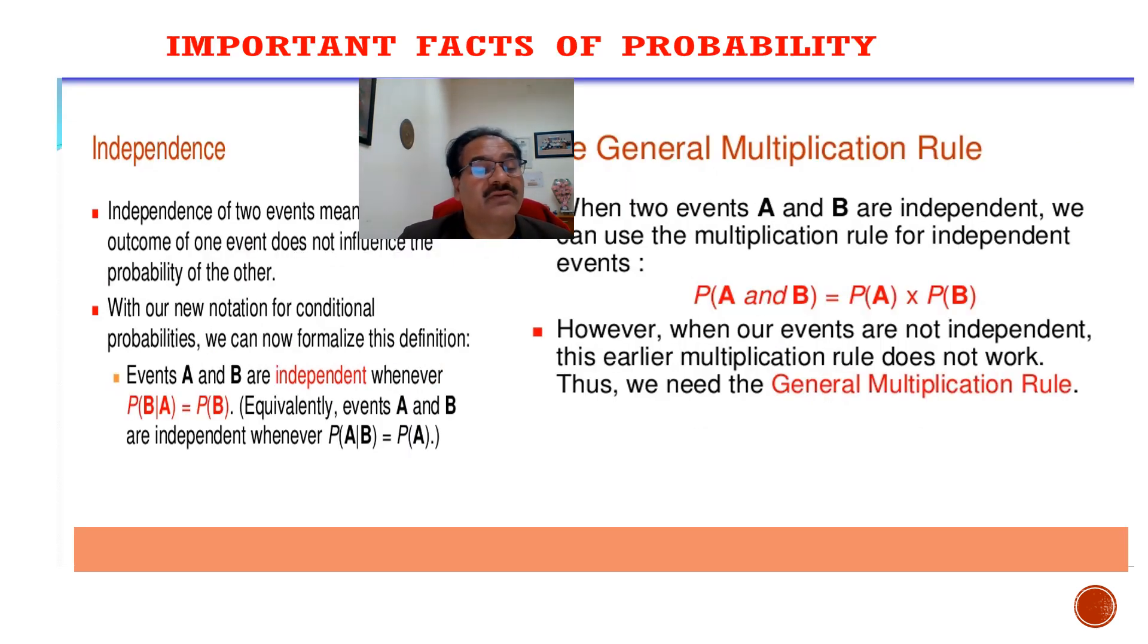Now independence. What is independence in probability? Independence of two events means that the outcome of one event does not influence the probability of the other. This is the actual meaning in probability. With our new notation for conditional probability, we can now formalize this definition. Events A and B are independent whenever P of B given A is equal to P of B. Equivalently, events A and B are independent whenever P of A given B is equal to P of A.